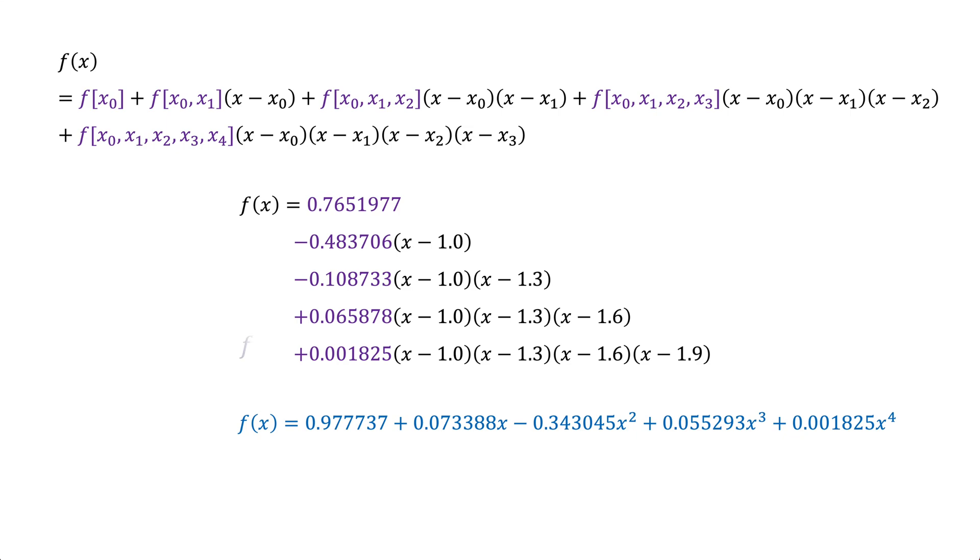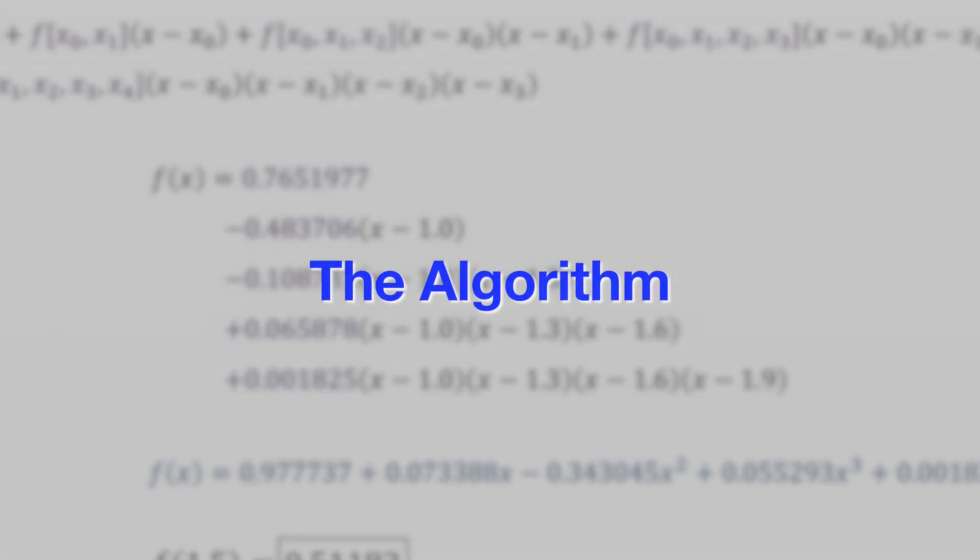Finally, we can get the value of f at x equals 1.5, either from the explicit form or from the general form of Newton's interpolation polynomial.